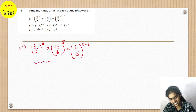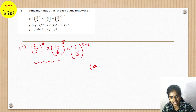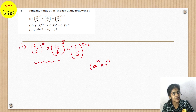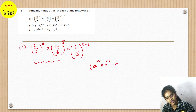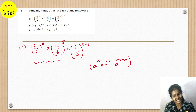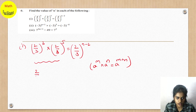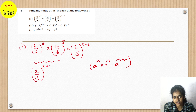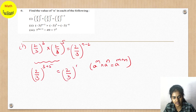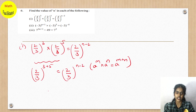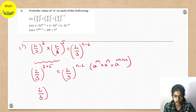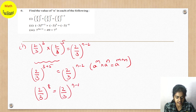Let's see the LHS first. In the LHS it is of the form a^m × a^n. The bases 2/3 and 2/3 are the same. So a^m × a^n equals a^(m+n). This gives us (2/3)^(3+5), which equals (2/3)^(n-2).